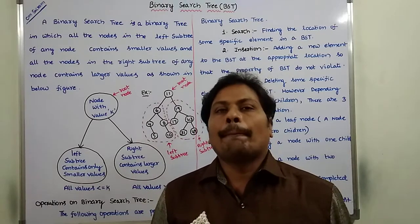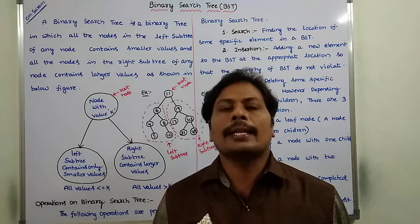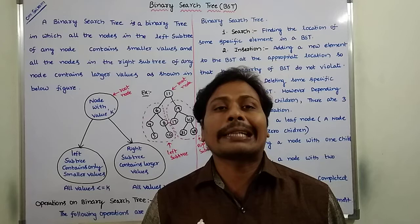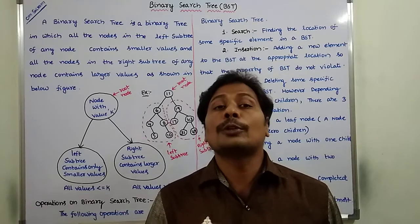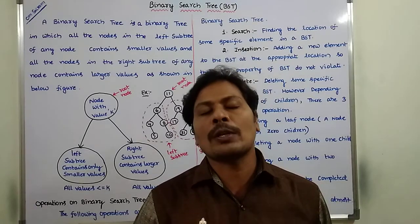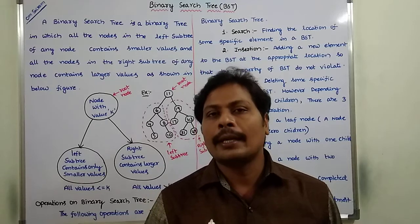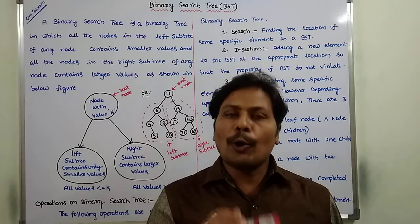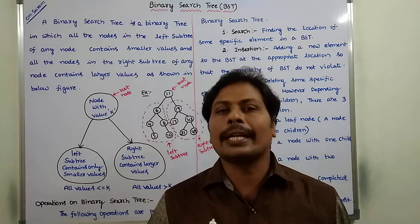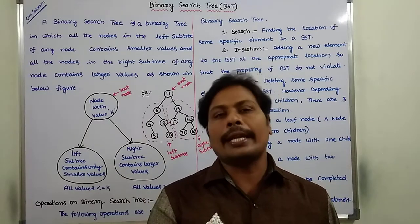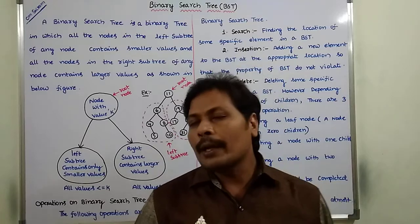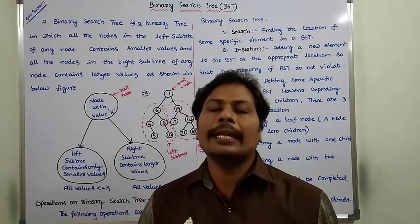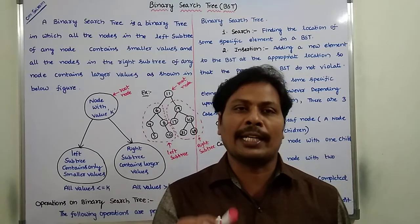First of all, a binary search tree is a binary tree in which every node can contain at most two children. At most two children means a node may contain zero children, a node may contain one child, or a node may contain two children. So each and every node in the binary search tree can contain at most two children.